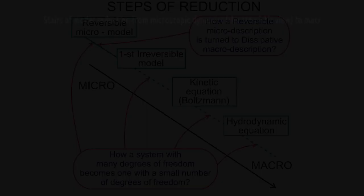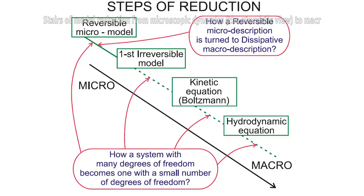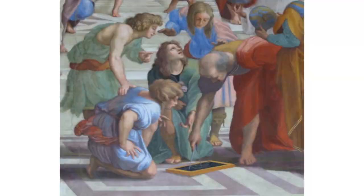Hilbert's sixth problem is to axiomatize those branches of physics in which mathematics is prevalent. It occurs on the widely cited list of Hilbert's problems in mathematics that he presented in the year 1900. In its common English translation, the explicit statement reads as such.